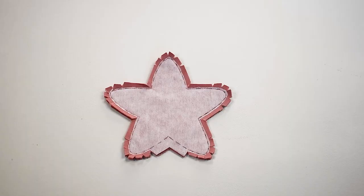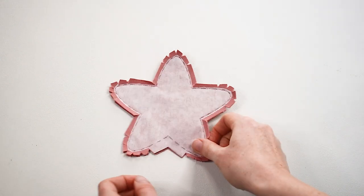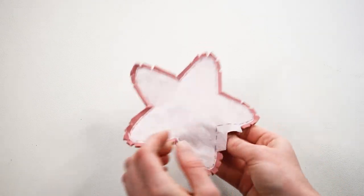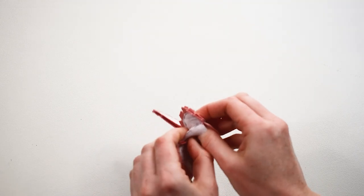If you used fusible interfacing, now is the time to fuse it to your fabric with an iron. Turn the steam off, then use a low heat and press cloth if you're using synthetic material. Press the iron gently and do not glide it as this can shift the fabric and cause puckering.